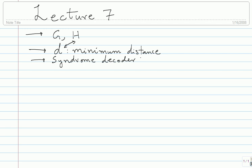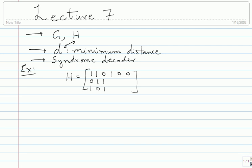I want to close out the syndrome decoder with one final example. We will pick a code, go through the syndrome decoder once again, then do a simple calculation to find the probability of block error. This is the final example I am going to do on syndrome decoding. What we have been doing in the previous class was modifying codes, and I will get back to that soon, but first let me drive home this point once more.